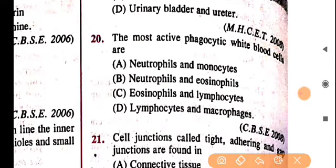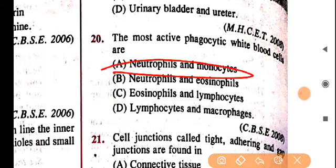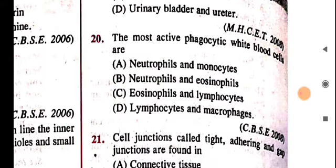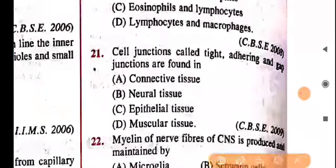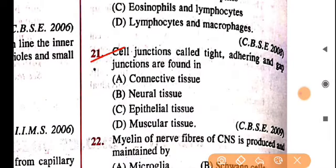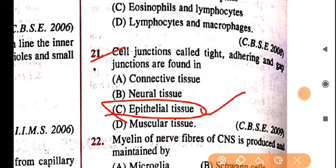Question 20: the most active phagocytic white blood cells are neutrophils and monocytes — this is very important and will be studied again in Class 12. Question 21: cell junctions — tight junctions, adhering junctions, and gap junctions — are found in epithelial tissue, without any doubt.